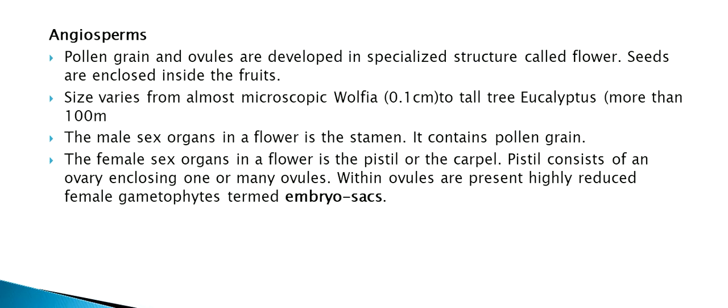Next is angiosperms. Pollen grains and ovules are developed in a specialized structure called a flower. Seeds are enclosed inside fruits. Size varies from almost microscopic Wolffia to the tall tree Eucalyptus. The male sex organ in a flower is the stamen, which contains pollen grains. The female sex organ in a flower is the pistil or carpel. The pistil consists of an ovary enclosing one or many ovules. Within the ovules are present highly reduced female gametophytes termed embryo sacs.